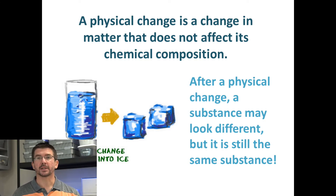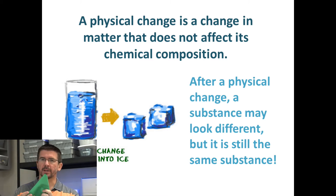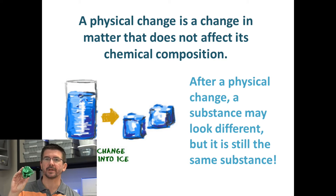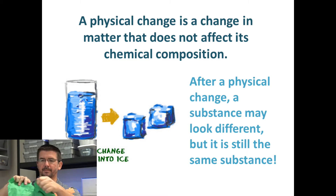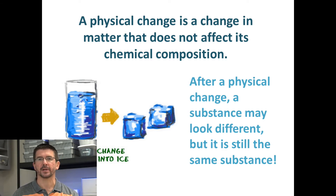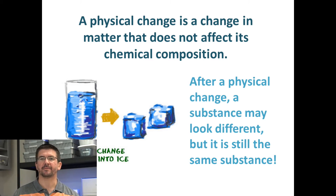A really simple but good example of this is a piece of paper. If I take this piece of paper and ball it up, it looks different than it did before, but it's still a piece of paper — it hasn't chemically been altered. It's undergone a physical change, a change of its shape. I can take the paper and tear it into smaller pieces. Now I have several pieces of paper, but I still have paper. I haven't created a new substance; I've just changed the appearance of the paper. That's what it means to have a physical change.